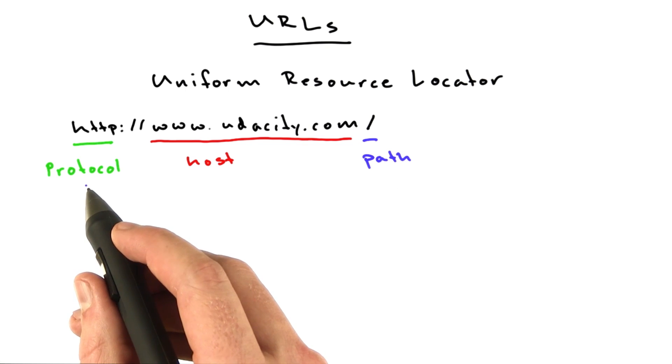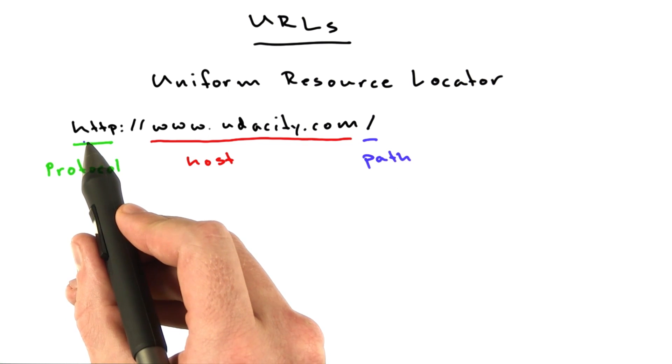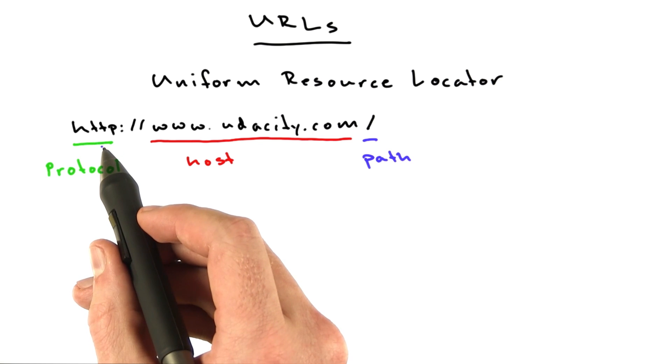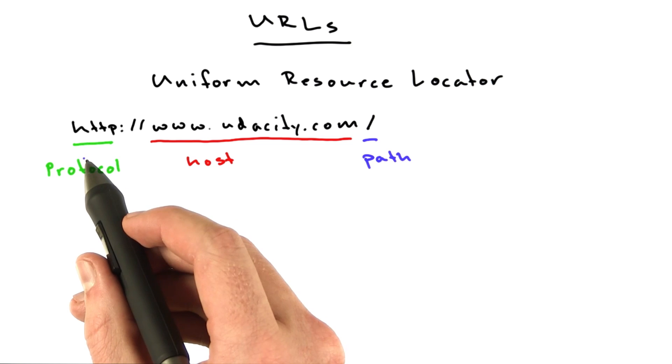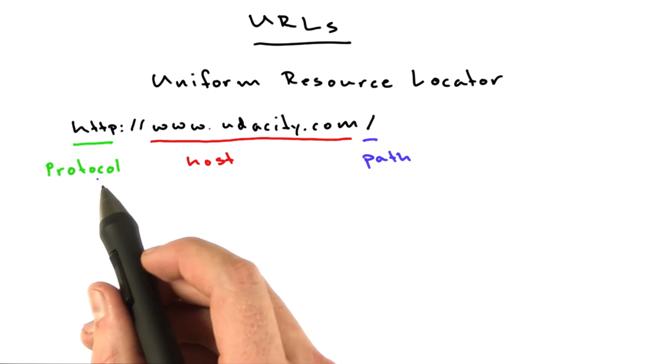Now, the protocol can be a number of things. But for our purposes, it's going to be HTTP almost all of the time. We'll also see HTTPS from time to time. And you'll see other protocols around the web. You might see FTP or things like that. But HTTP basically means the web. That's what we're going to be learning in this class.